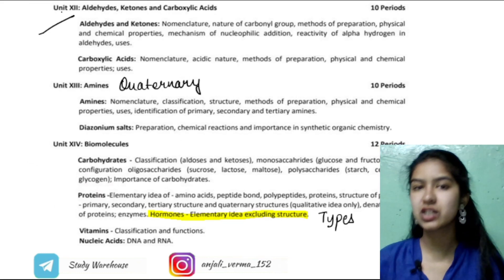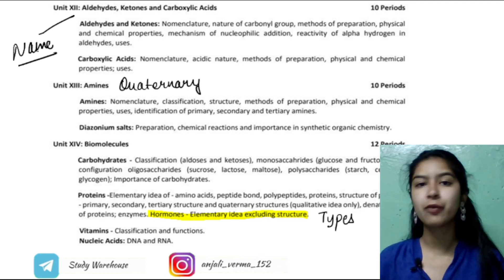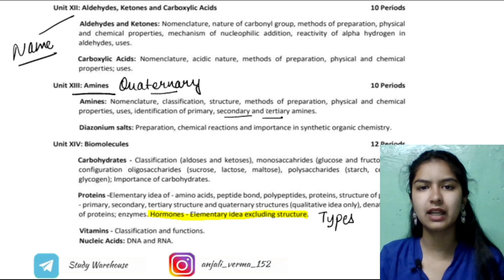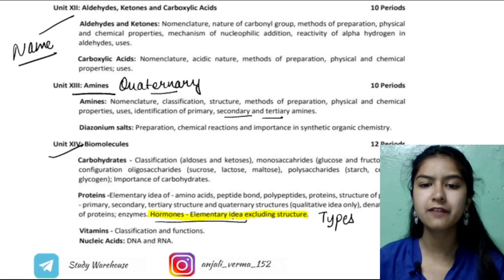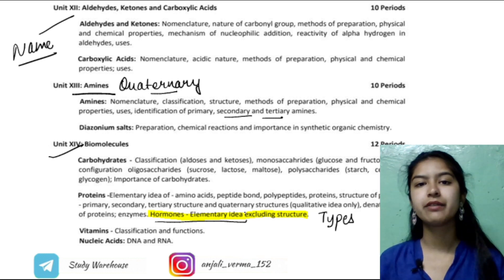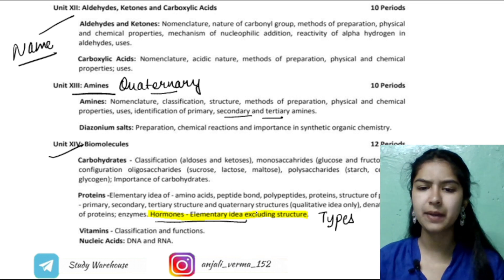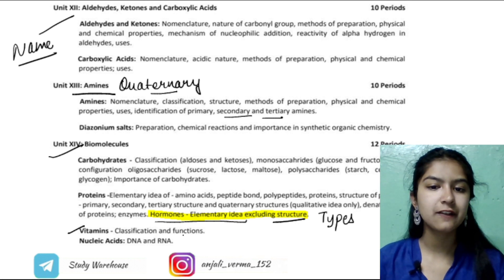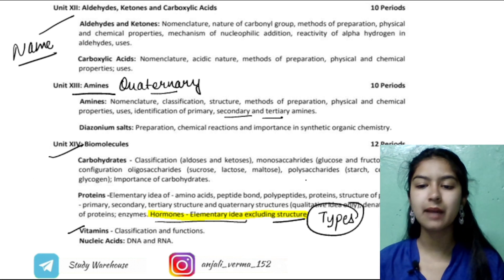For Alcohols, Phenols and Ethers, only primary alcohols with physical and chemical properties are written, but I suggest you also study secondary and tertiary since the reactions are interrelated. For Aldehydes, Ketones and Carboxylic Acids, name reactions are the most important — learn all name reactions first, then focus on the other reactions. For Amines, quaternary amines are not mentioned in the syllabus — identification of primary, secondary and tertiary amines is given — but quaternary is a small simple topic, so do it. For Biomolecules, hormones are only elementary idea — you need basic theoretical knowledge, not in-depth structure. Vitamins with classification and functions, and proteins including fibrous and globular types, are in the syllabus.